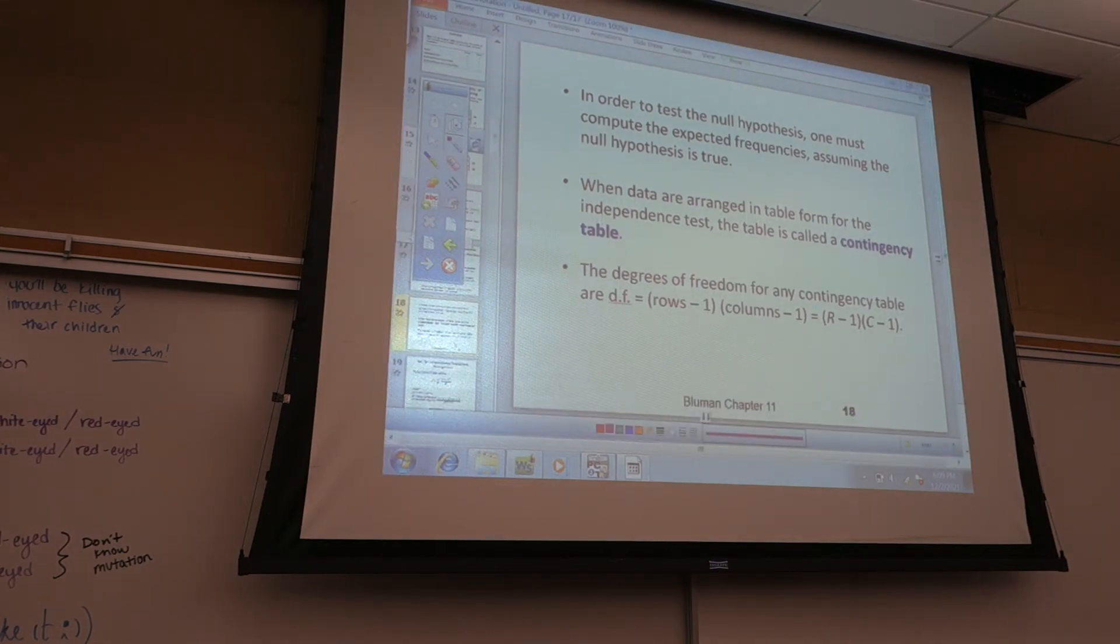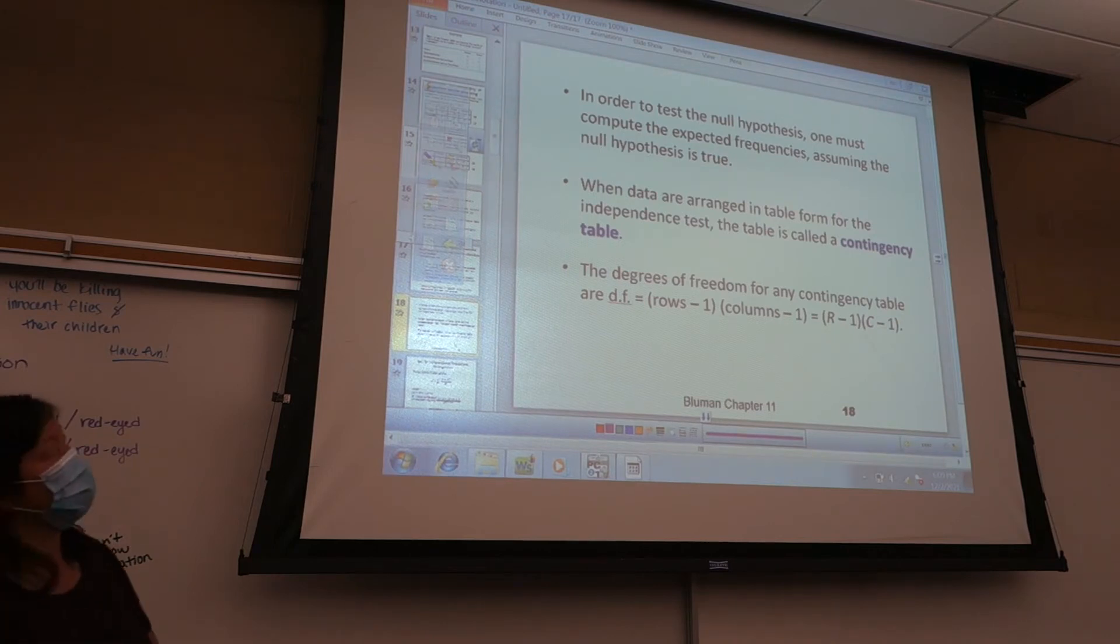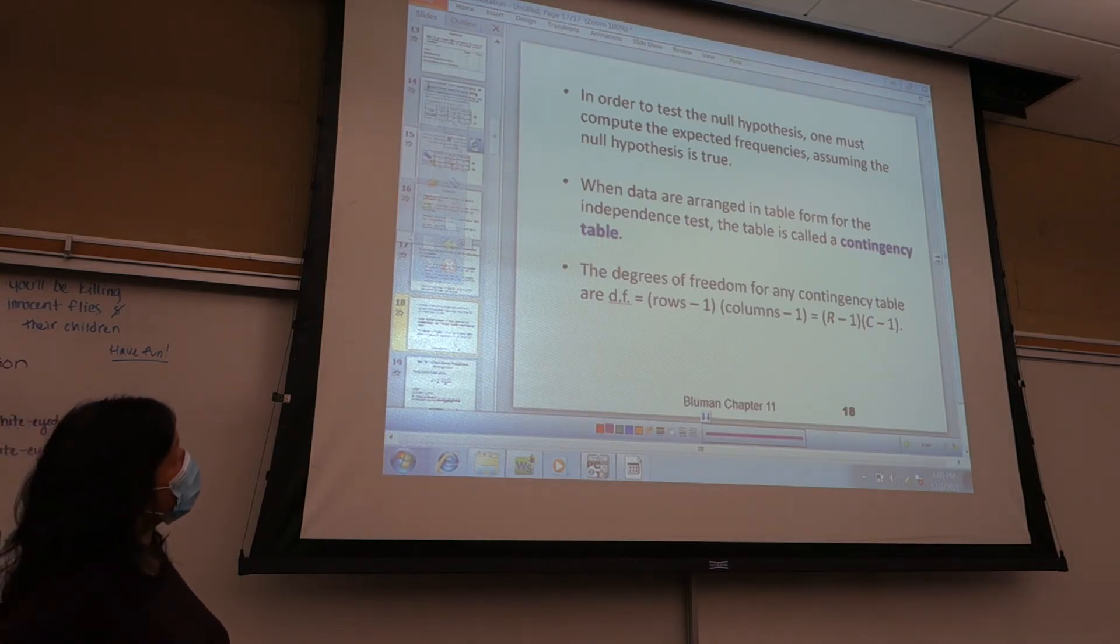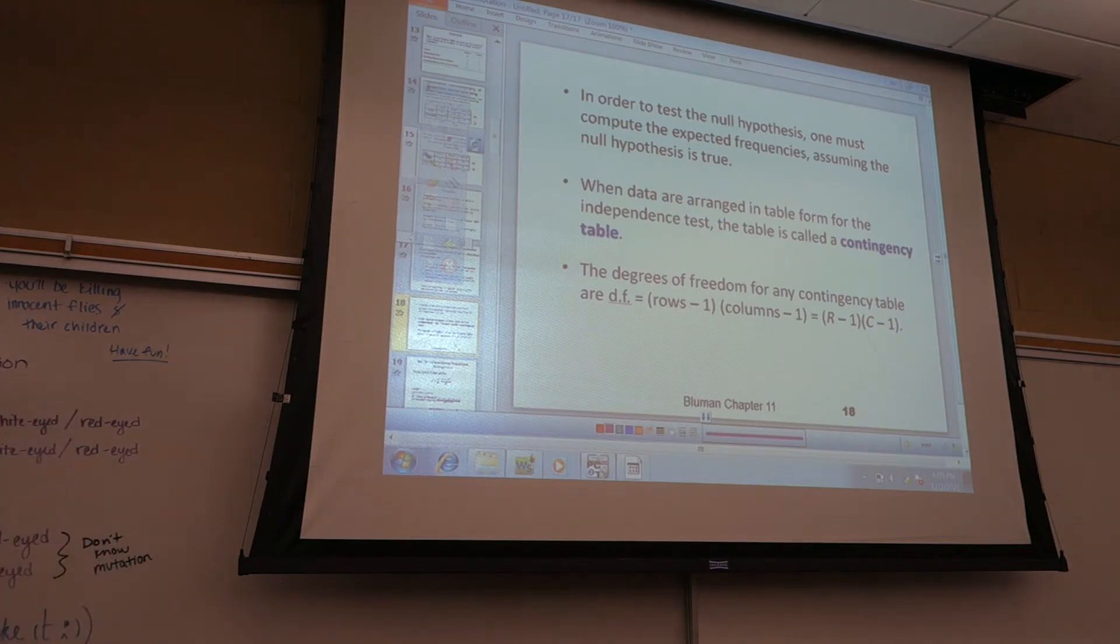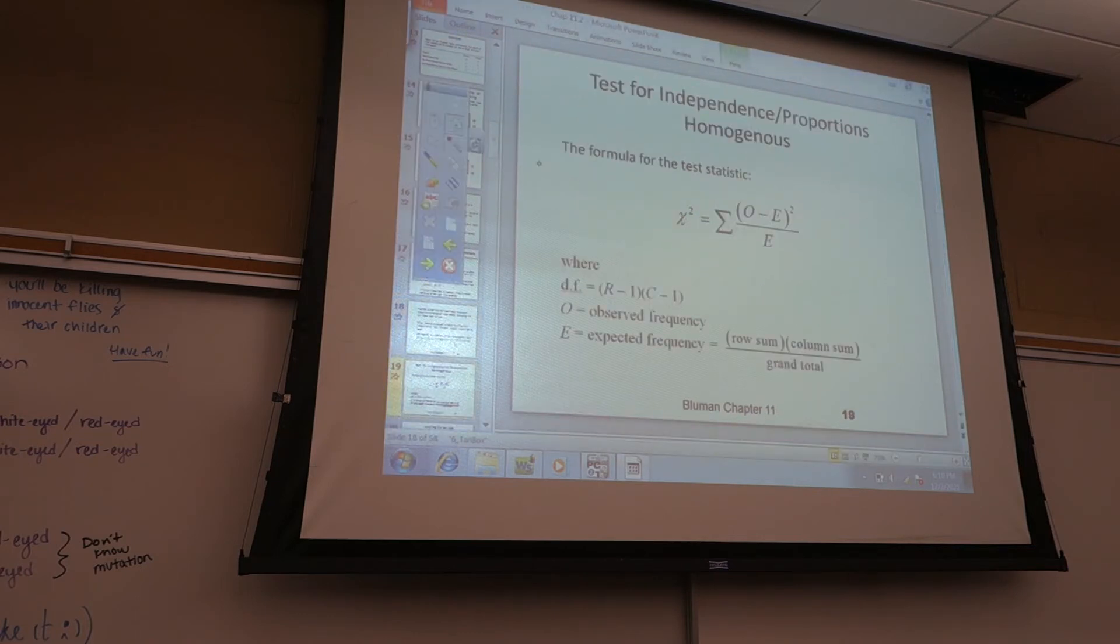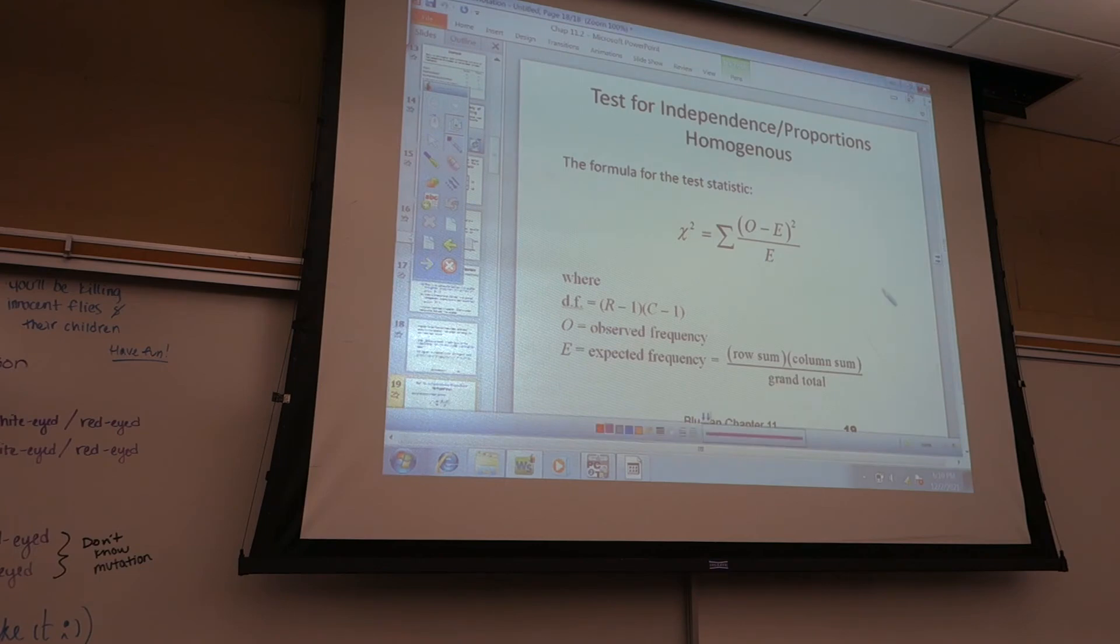So, in order to test the null hypothesis, we have to compute the expected frequencies. Assume that the null hypothesis is true. So we're going to compute the expected frequencies. When data are arranged in table form for the independence test, it's called a contingency table. Our degrees of freedom is rows minus one, multiplied by columns minus one. So you have to figure out how many rows you have, count how many columns you have, and then subtract one from each and multiply them. And again, the formula for your test statistic is exactly the same as for 11.1. Take every observed, minus the expected squared, divide by the expected, and then add them all up.